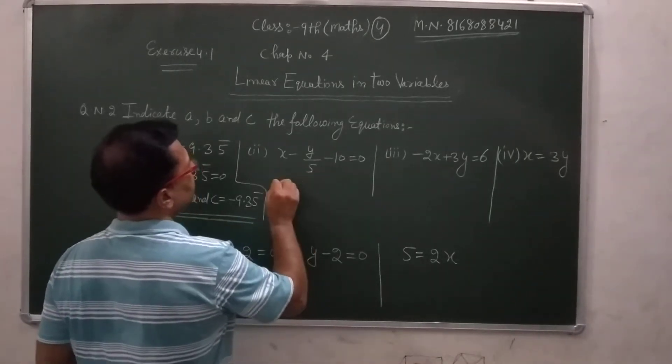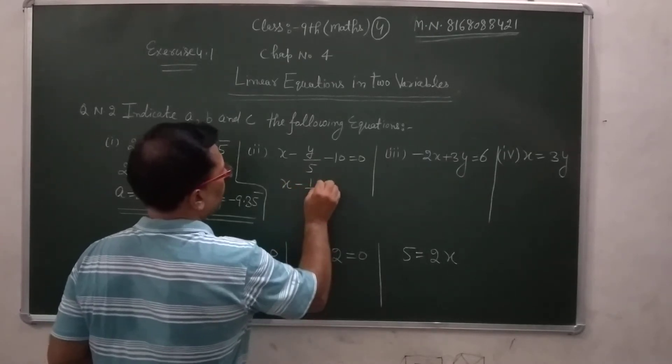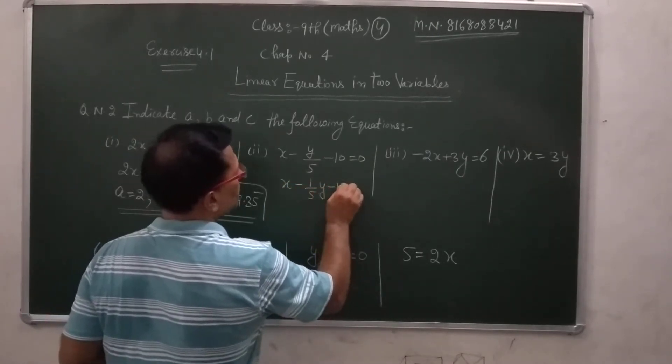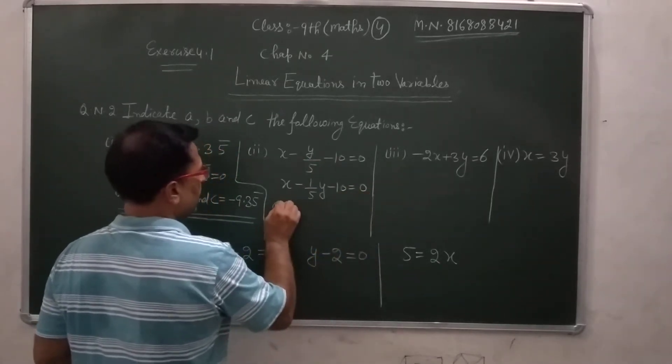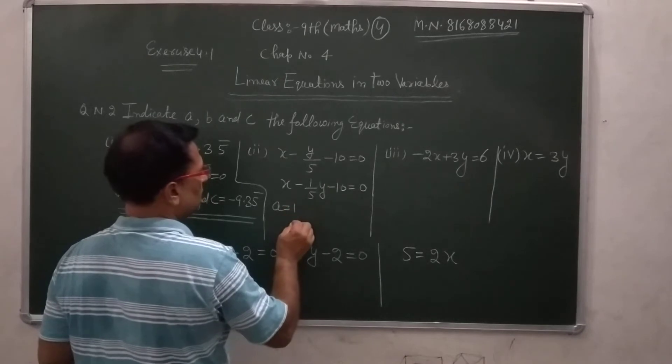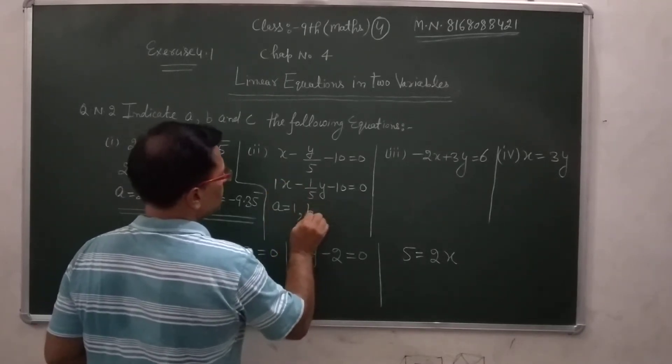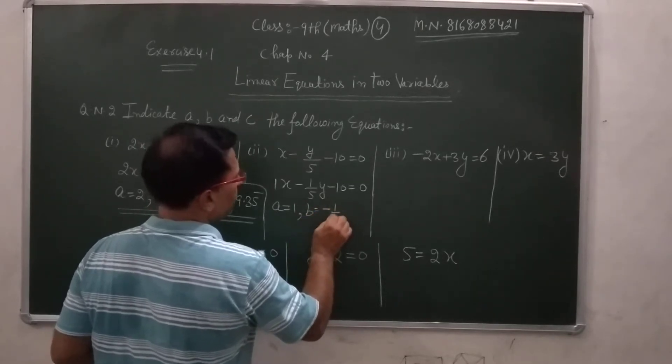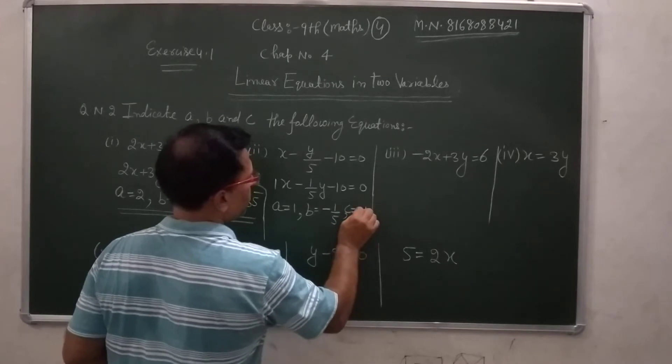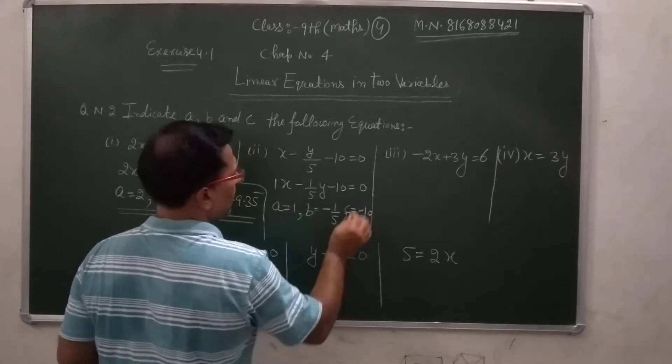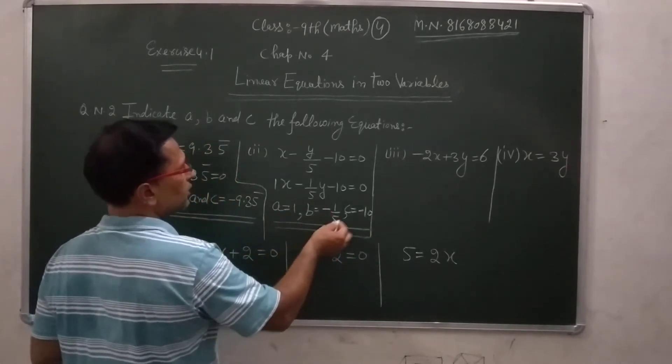This can be written as x minus 1/5y minus 10 is equal to 0. This is how we have indicated: A is 1, B is 1, C is 1.